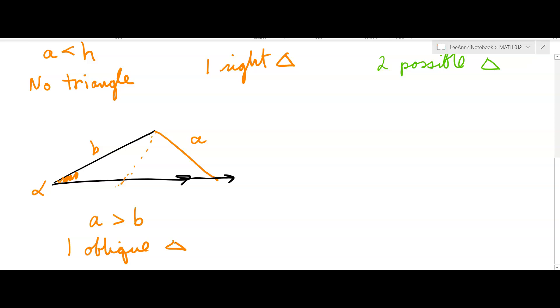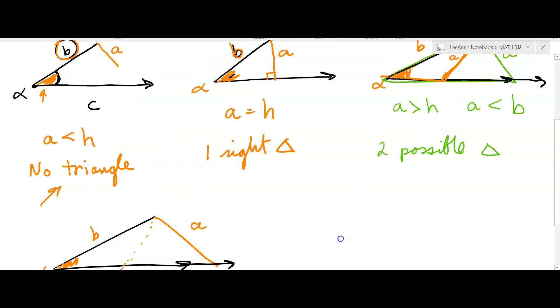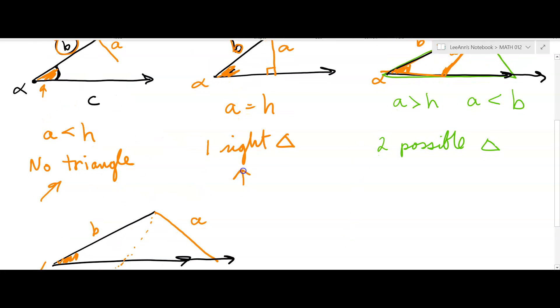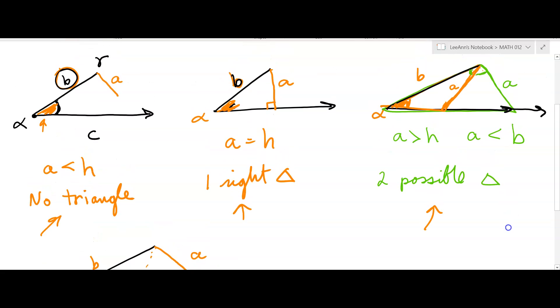And so that happens when a is greater than b, and you do get one oblique triangle. So, those are the four possibilities. You might not have any triangle, if a is less than h. You might have one right triangle, if a equals h. You might have two triangles. And then, if you have two triangles, if you're asking, well, which one do I solve? You have to solve both then. You have to say, we don't know which triangle it is, so we've got to do both.